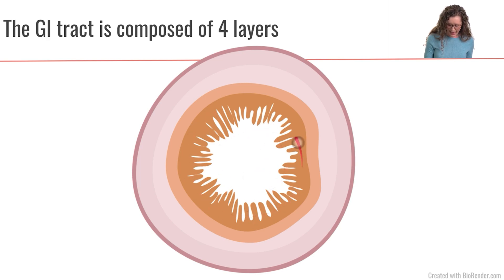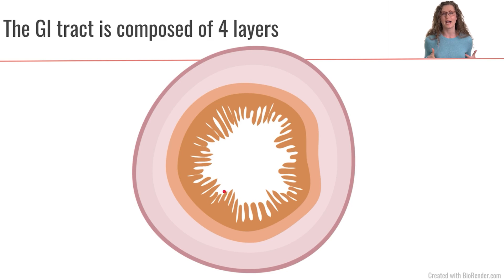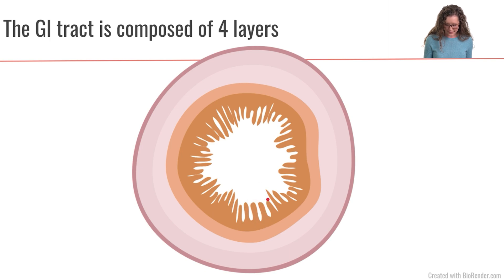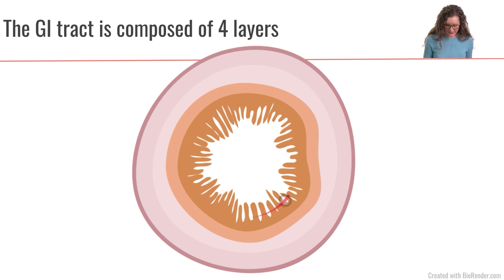The next layer in our gastrointestinal tract is called the mucosa layer. The mucosa is going to be lined with a layer of epithelial cells — cells that are facing towards the outside environment. Our gastrointestinal tract is continuous with the external environment. These epithelial cells are going to be responsible for absorbing the nutrients that are in our lumen and getting them into our body. This first layer here is the mucosa layer, and we'll talk in more detail about it a little bit later.